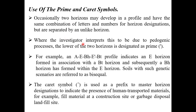To avoid that confusion, we use tools called the prime and caret symbols. Occasionally, two horizons may develop in a profile having the same combination of letters and numbers of the horizon designation but separated by unlike horizons. They may have the same properties in a profile with the same combination of letters and numbers for horizon designation, but separated by some sort of unlike origin.